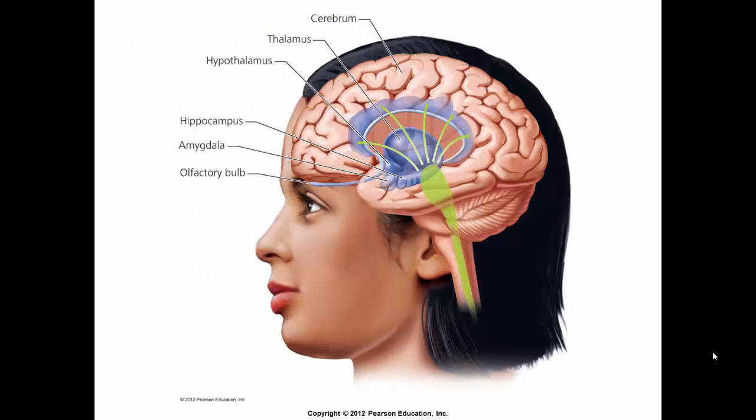The limbic system allows individuals to experience countless emotions, such as rage, pain, fear, sorrow, joy, and even sexual pleasure. From this image, you can see where the olfactory bulb leads from smell, the senses, into the limbic system.